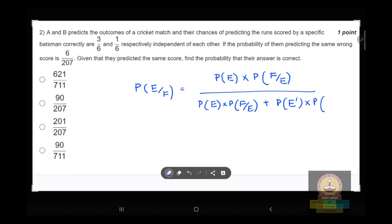So defining F and E: E event is correct score, and F is same score.